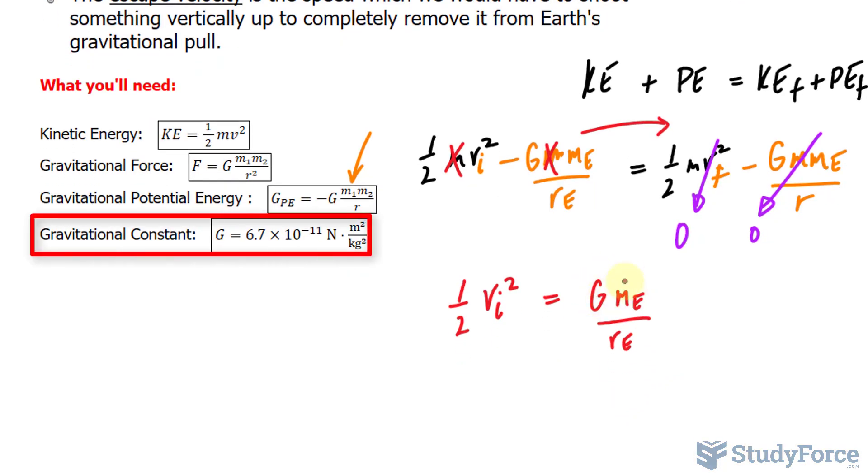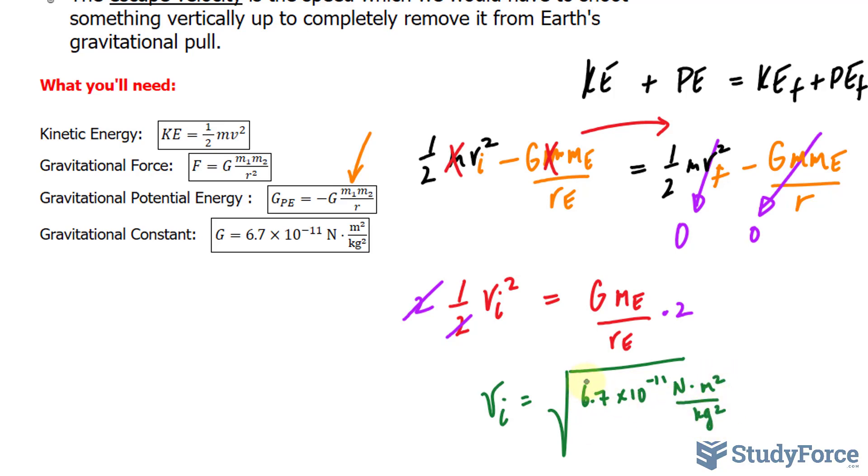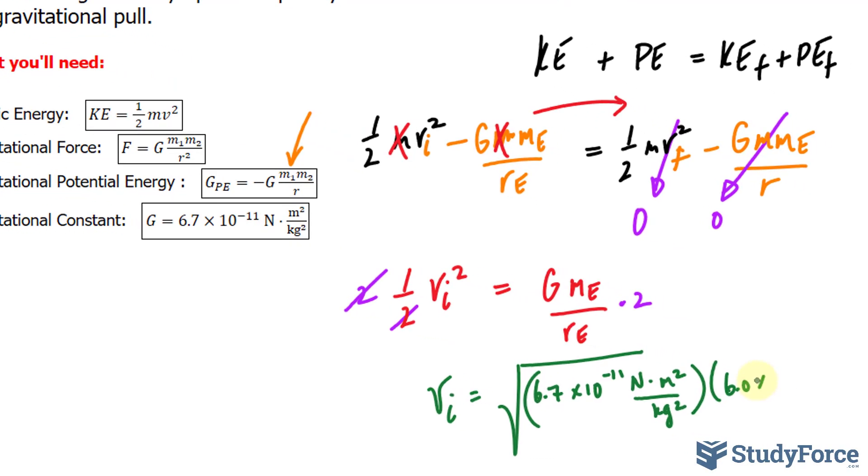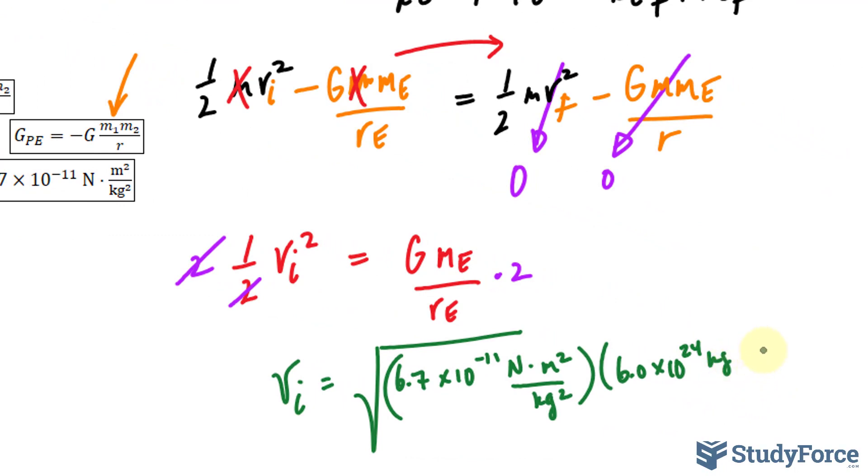And that's a constant. The mass of the Earth is something that would be given to you in the question. And now we'll multiply both sides by two to get rid of this fraction. Multiply this side by two, and we will square root both sides. So we have the initial velocity is equal to the square root of that value, 6.7 times 10 to the power of negative 11 newtons meters squared per kilogram squared. And we'll multiply that by the mass of the Earth, which is 6.0 times 10 to the power of 24 kilograms.